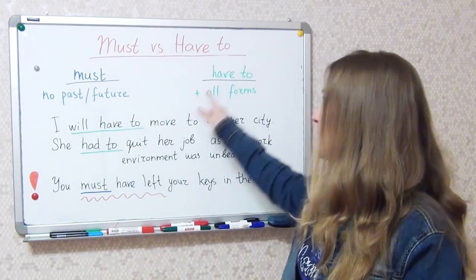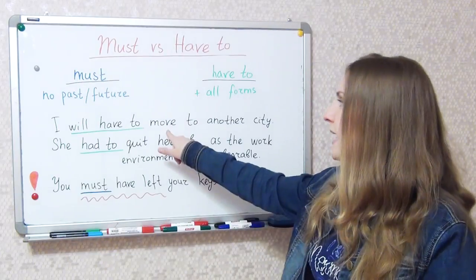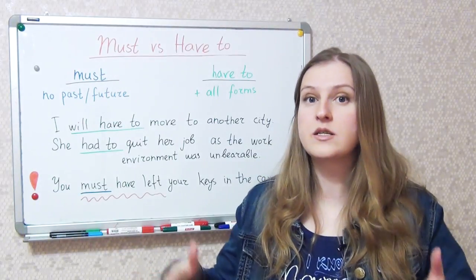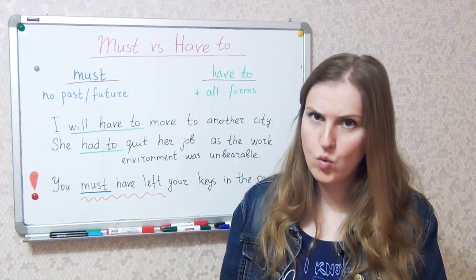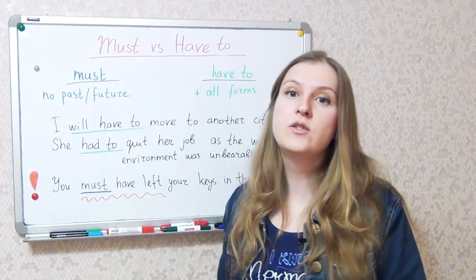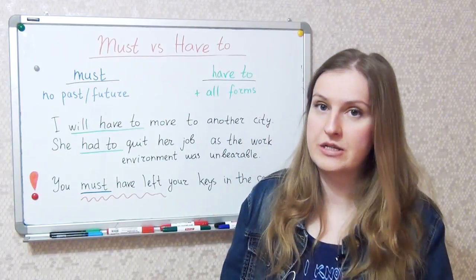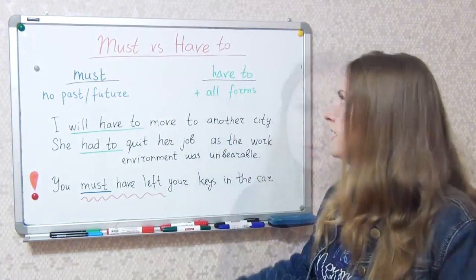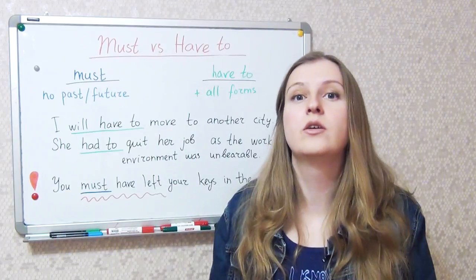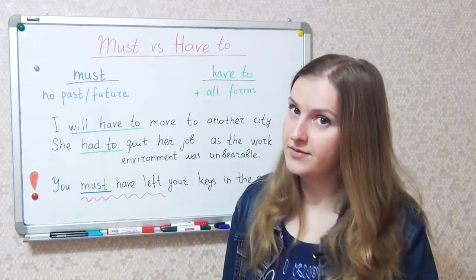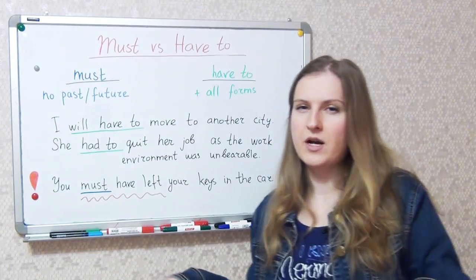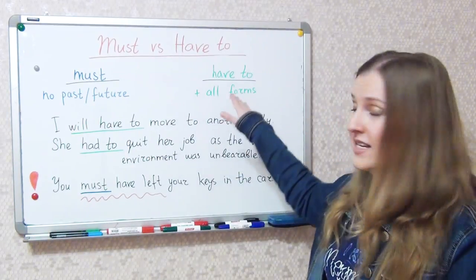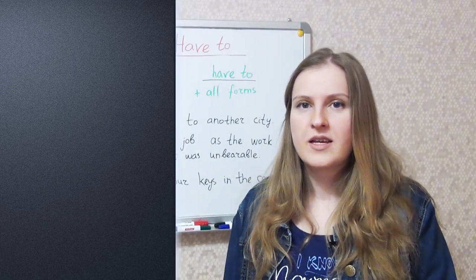Also notice that after have we always have the particle to before the next verb. While when we use must, there is no particle to after it — I must go, not I must to go. Also, must is placed at the beginning of the sentence to form a question: Must you go now? You don't use an auxiliary verb here. While have to behaves like a regular verb, because it is an equivalent of a modal verb. Modal verbs are all sophisticated and difficult, while the equivalents of the modal verb are just casual.